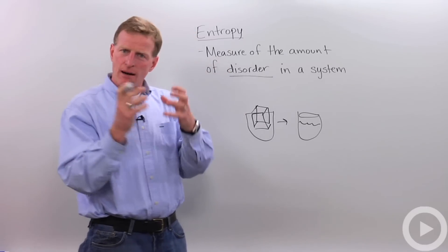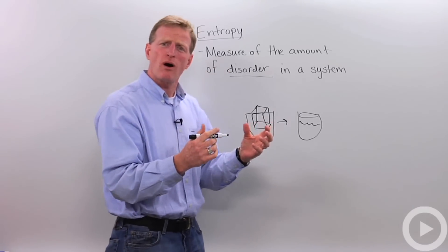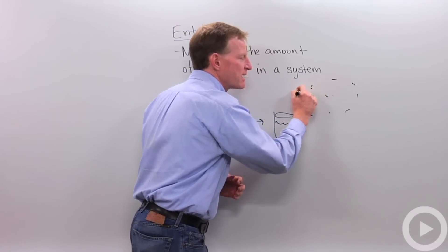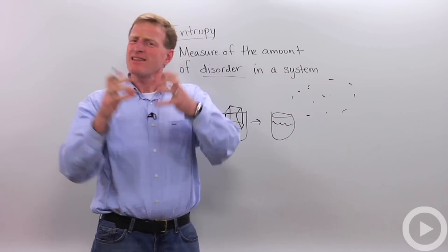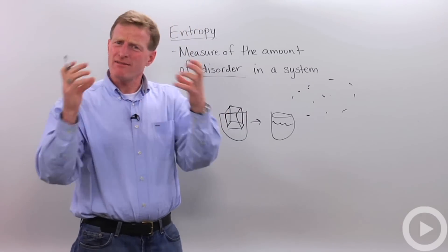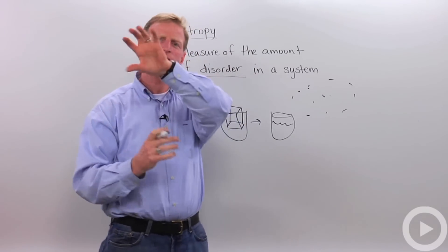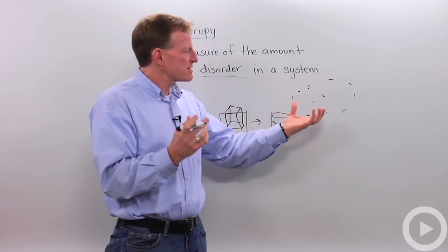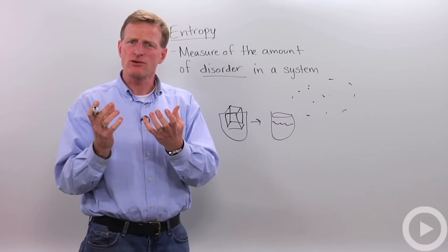If we let that continue to evaporate, it's going to turn into water vapor, and it's going to become all the molecules in the air, in water vapor. And that's got a lot of energy and a lot of disorder. And those molecules are going everywhere and bouncing and colliding into other things. So that is a system with a lot of disorder, high entropy.